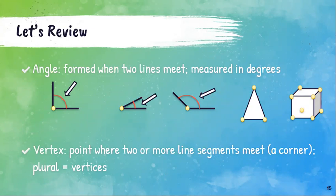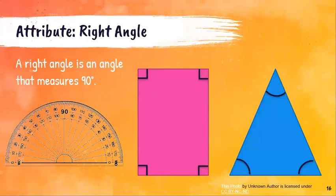So when we talk about shapes, we are going to be talking about the attributes of shapes. We are going to use the attributes of shapes to sort them, to classify them, to decide what kind of categories they fall into. One of the attributes we are going to look at is whether or not shapes have what are called right angles.